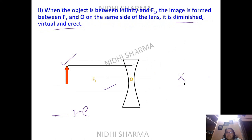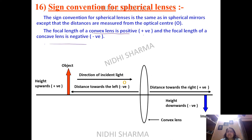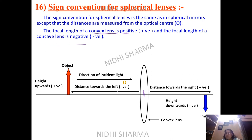Now for sign conventions for spherical lenses, we follow the same rules as mirrors. Left side is negative, right side is positive. All distances are measured from the optical center — not the pole as in mirrors. The object is always on the left. Height above the principal axis is positive; height downward is negative.